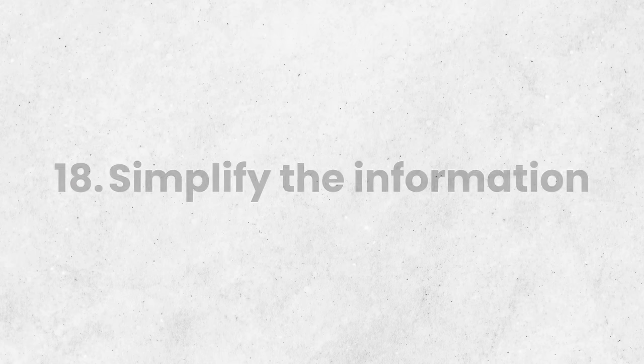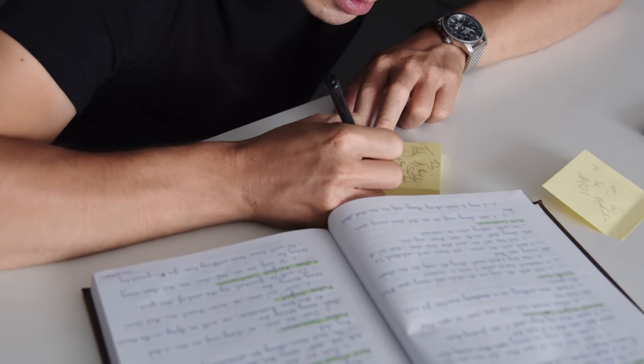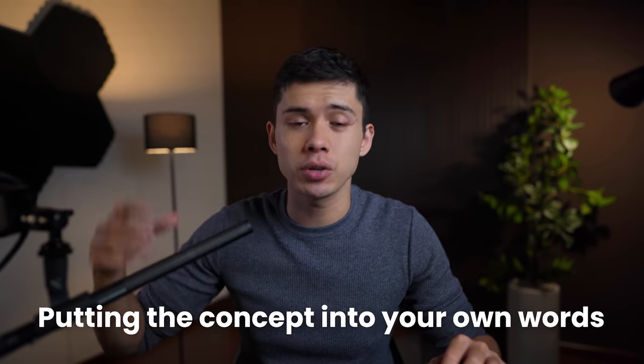Simplify the information. Simplifying information you've just learned makes it easier to remember long-term—perfect if you have an exam approaching. By summarizing a long complicated concept into a short one or two paragraphs, it will naturally be easier to remember. By putting concepts into your own words, you ensure you truly understand them and store the information in your long-term memory. You might notice a theme throughout this whole video: speed learning is all about actively processing the information you're learning.